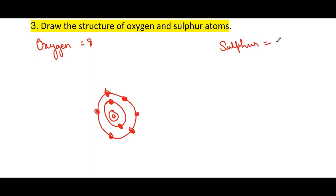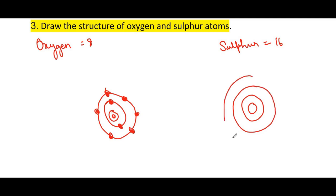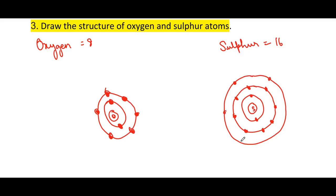For sulfur, the atomic number is 16. The first shell holds 2 electrons, the second shell holds 8 electrons, and the third shell holds 6 electrons — giving configuration 2, 8, 6. This is the structure of the sulfur atom.